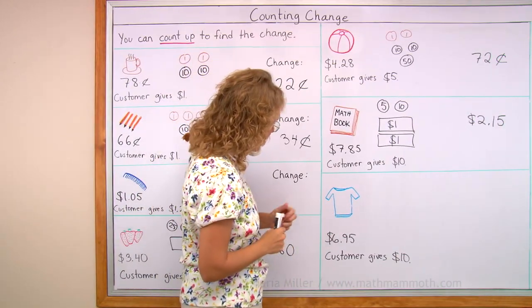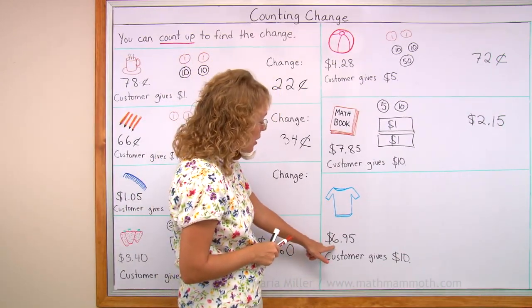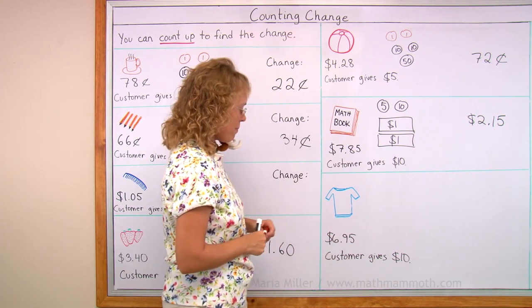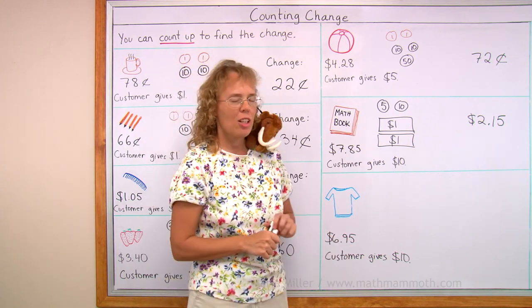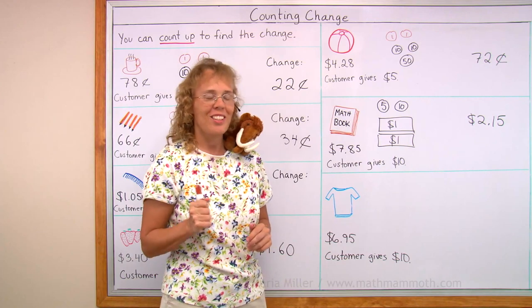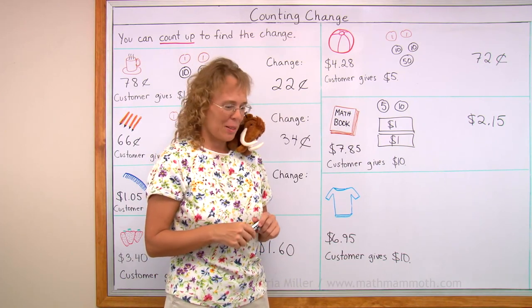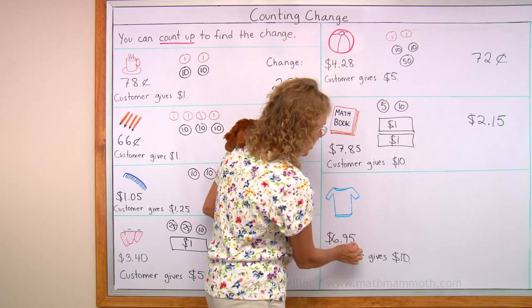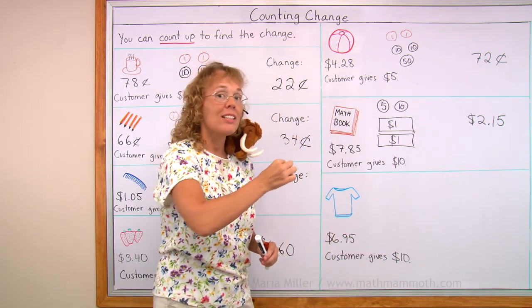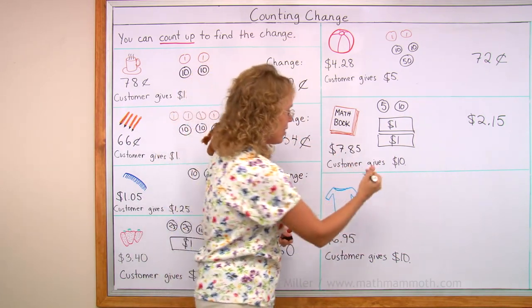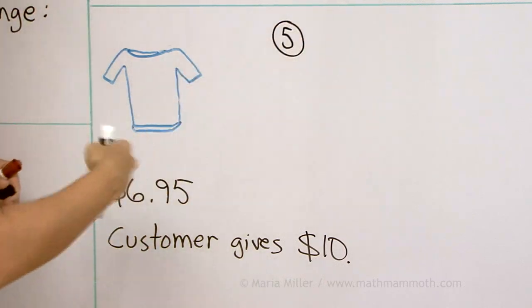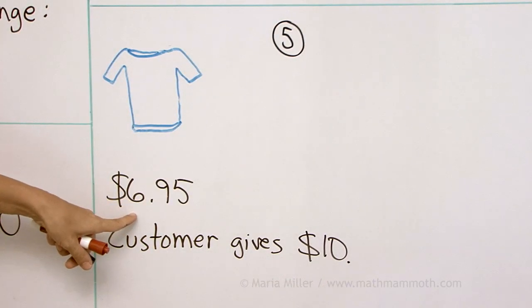And lastly, a nice t-shirt. $6.95. The customer gives $10. Can you figure it out once again on your own? From $6.95, add $0.05. And then you are at $7, at the next whole dollar. And from $7 to $10, $3.